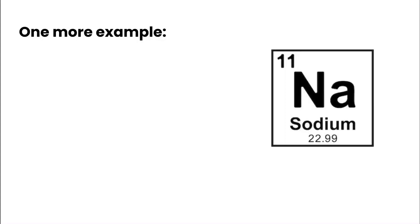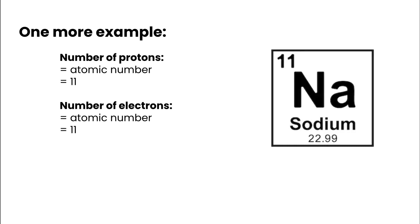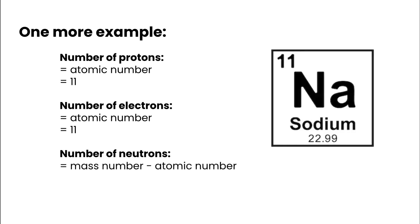One more example: sodium, chemical symbol Na, atomic number 11, and atomic mass 22.99. Number of protons equals the atomic number: 11. Number of electrons in a neutral atom of sodium also equals the atomic number: 11. Number of neutrons equals mass number minus atomic number: we round 22.99 to 23, then 23 minus 11 gives us 12 neutrons. So sodium has 11 protons, 11 electrons, and 12 neutrons.